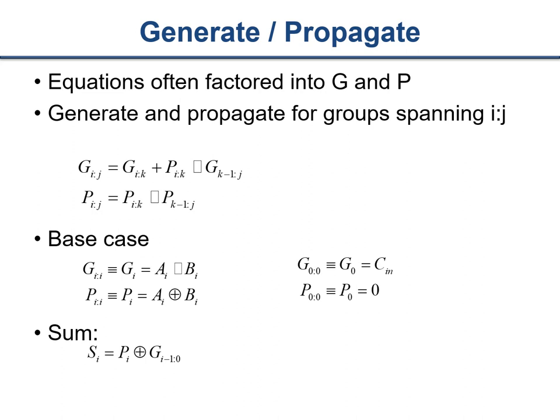We then factored these generate and propagate expressions into larger groups. We said that generate for bits i through j equals generate of bits i through k, OR (propagate i through k AND generate of k-minus-1 through j). We can go through a similar explanation for the propagate case. We have definitions for the base case, and we can then compute the sum effectively by XORing the bitwise propagate signal with the group generate-to-zero signal. These equations sum up exactly what we're trying to implement, but it's hard to follow with all the i, j, k indices — so let's go through an example.